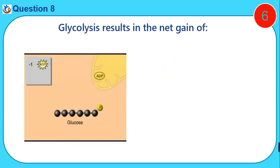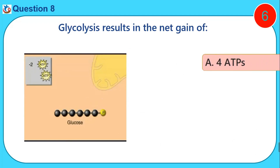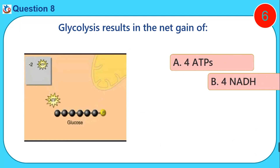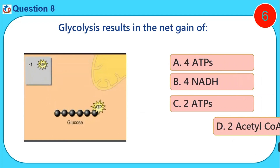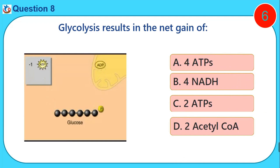Glycolysis results in the net gain of: A. 4 ATPs. B. 0 NADH. C. 2 ATPs. D. 2 acetyl-CoA.